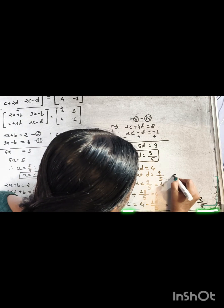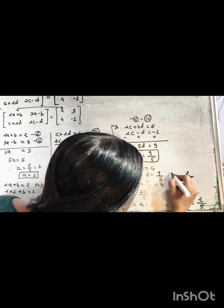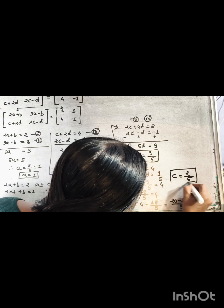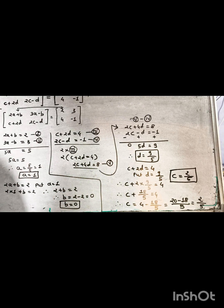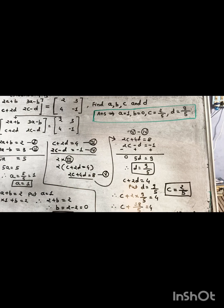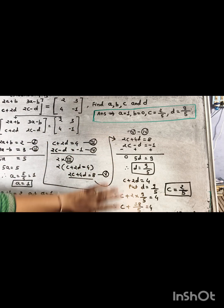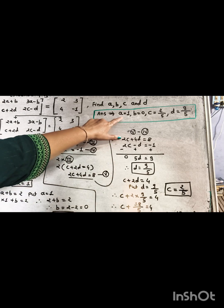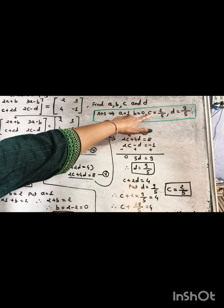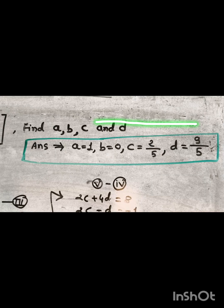So the final answers are: a equal to 1, b equal to 0, c equal to 2 upon 5, and d equal to 9 upon 5.